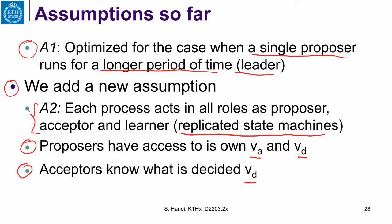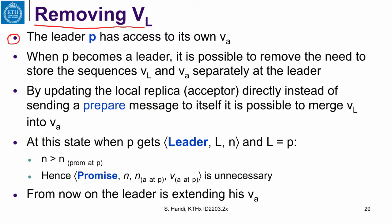That is a proposer, which is the leader in this case. And the acceptor knows what is decided, that is VD. What we want to achieve is that at each replica, the decided sequence VD is a prefix of the accepted sequence VA. In addition, at the leader's replica, the accepted sequence VA is a prefix of the proposed sequence. Now we would like to remove VL, the sequence at the proposer.